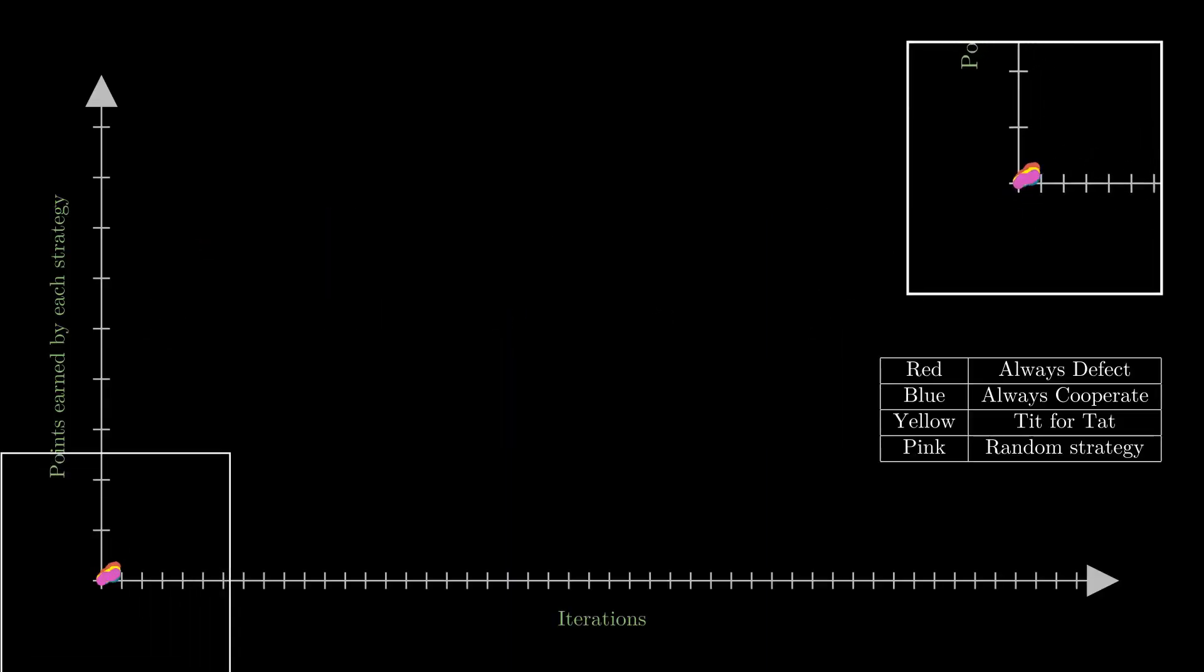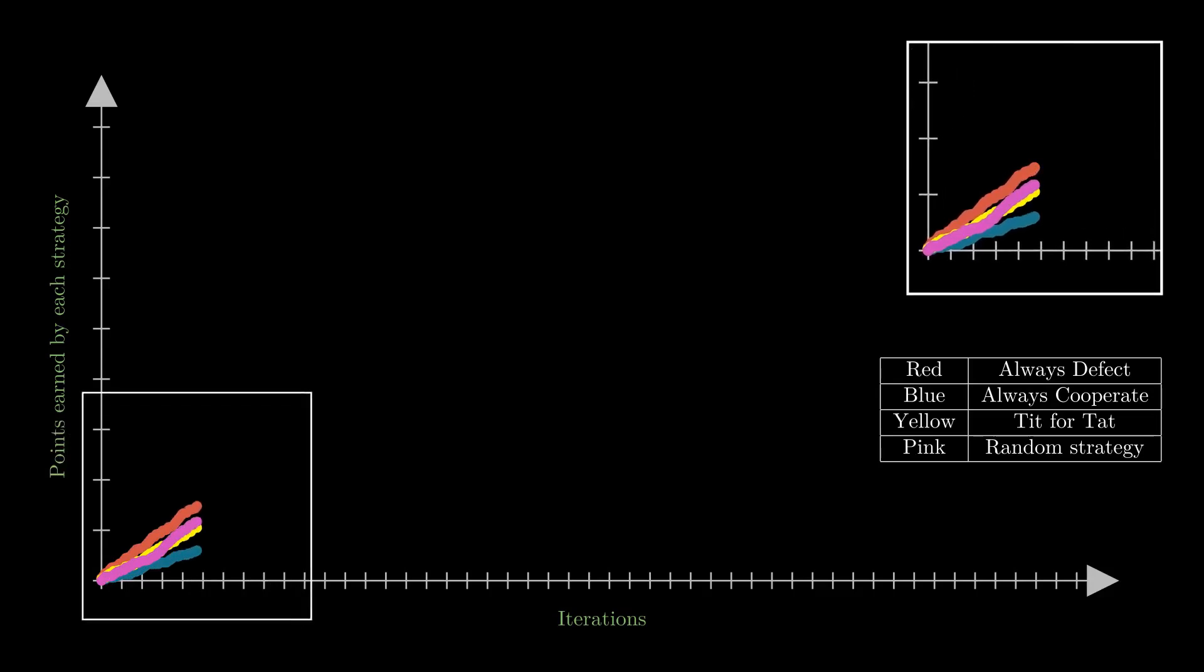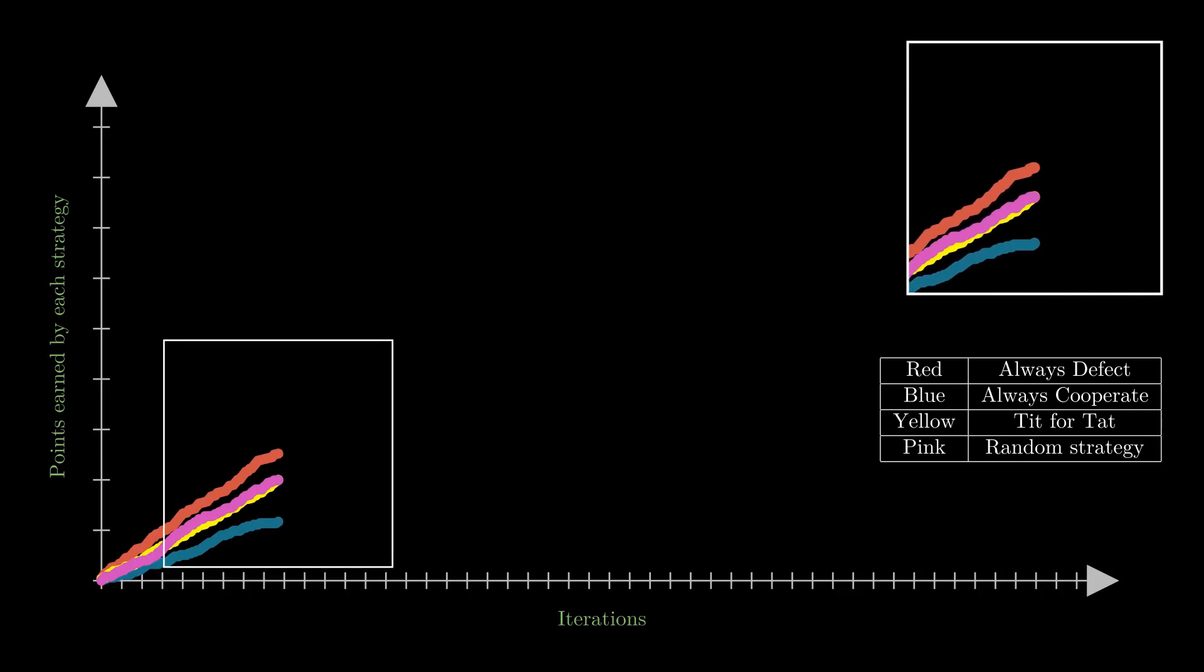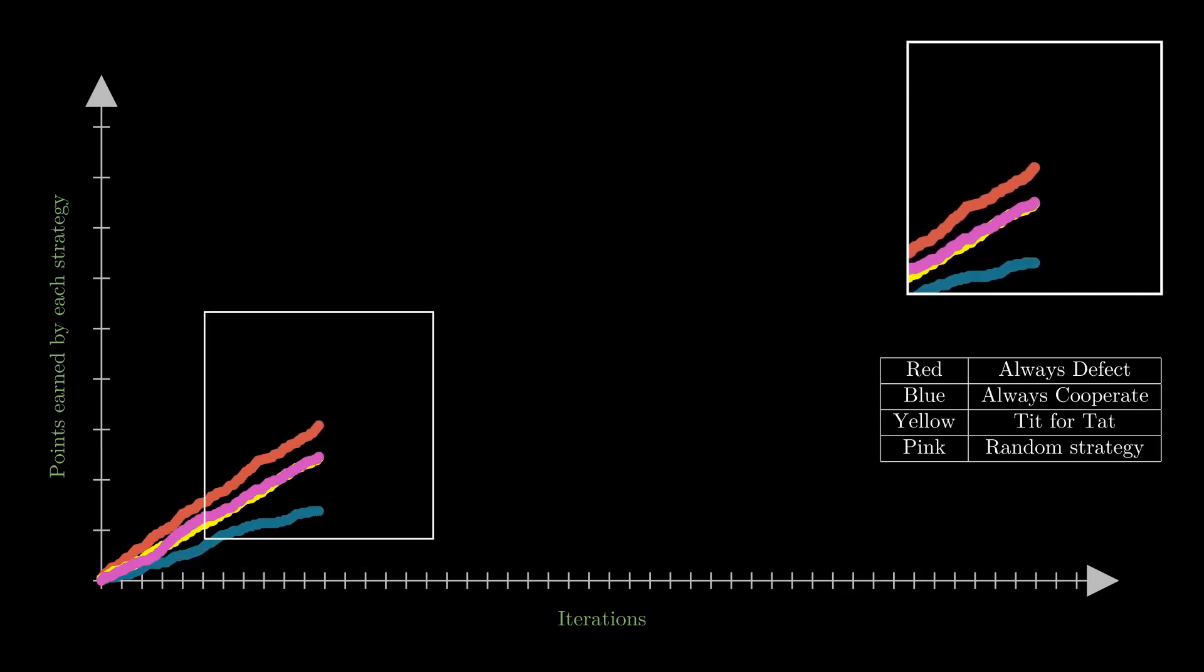When all other strategies are pitted against random strategy, you'll watch how always defect strategy will dominate the always cooperate strategy which will earn the least points. Think why that might be the case. When we are fighting the random strategy, if you are always defect strategy, you either get five points or two points depending upon what the random strategy does. If you are always cooperate strategy, you either get three points or zero points.